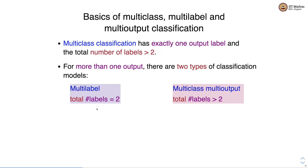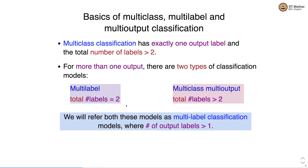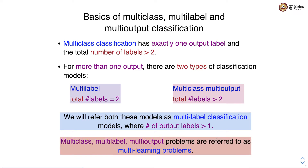The only difference between multi-label and multi-class multi-output is the number of labels — here it is two, and here it is greater than two. We refer to both these models as multi-label classification, where the number of output labels per sample is greater than one. Multi-class, multi-label and multi-output problems are all referred to as multi-learning problems.